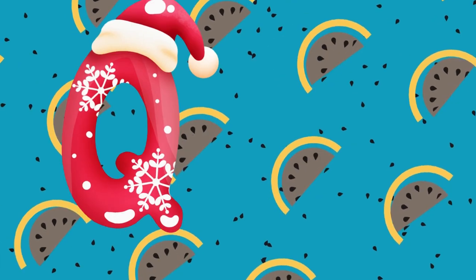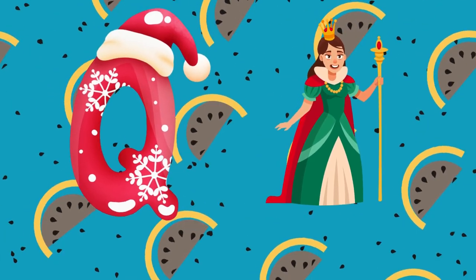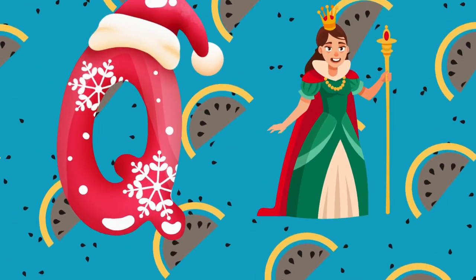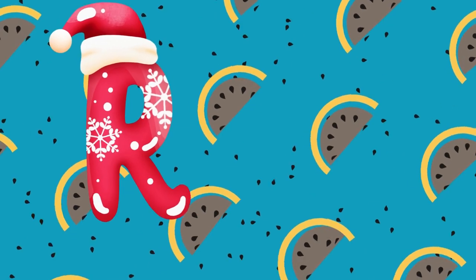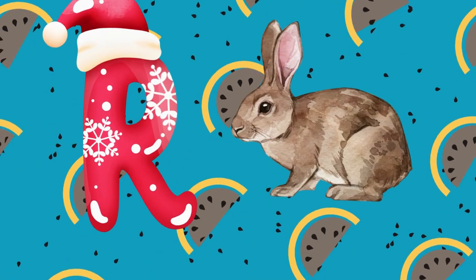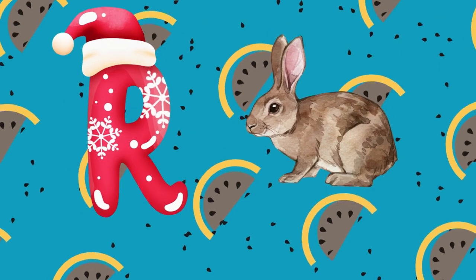Q is for queen, k-k-queen. R is for rabbit, r-r-rabbit.